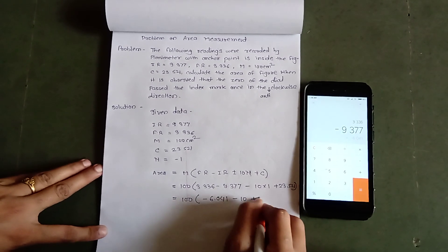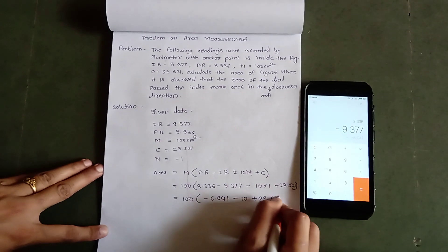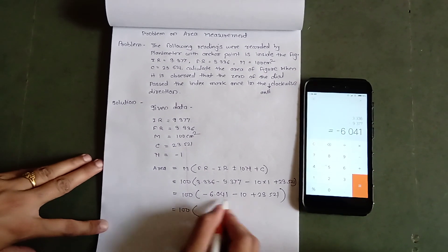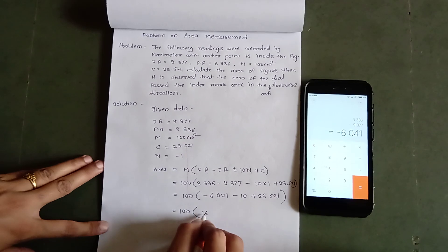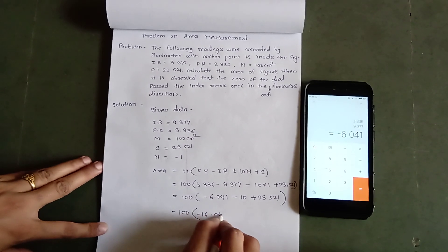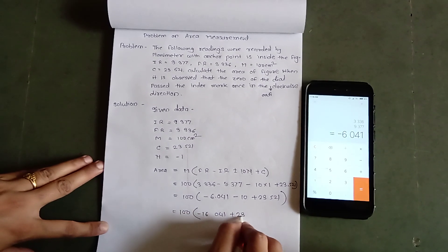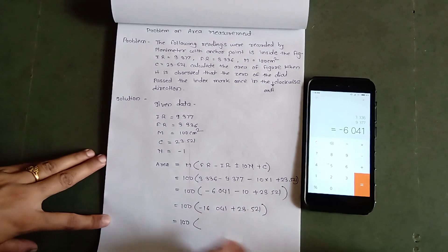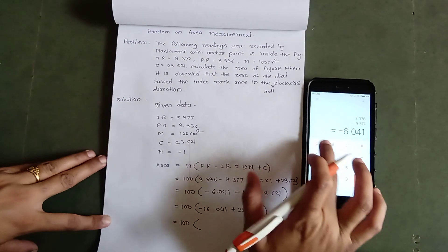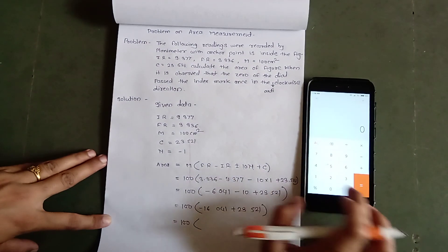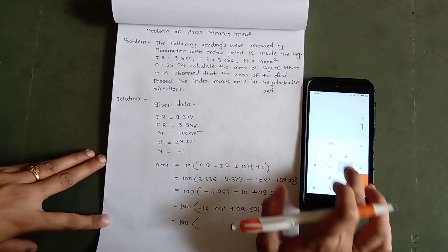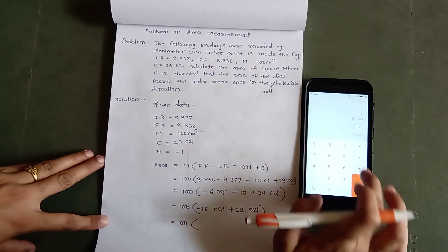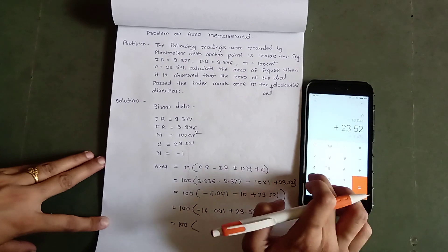10 plus 23.521. So, it equals 100 into bracket minus 6.041 plus 23.521. It equals minus 16.041 plus 23.521.